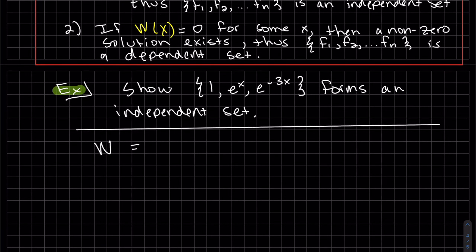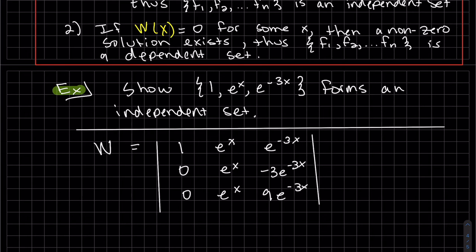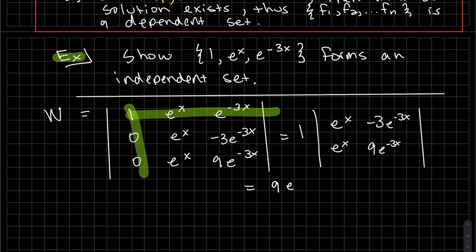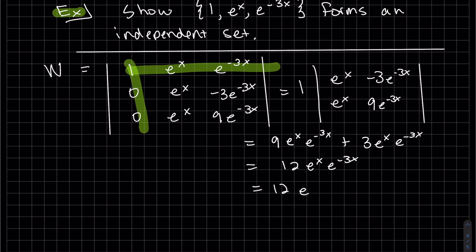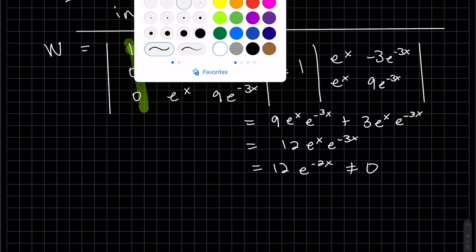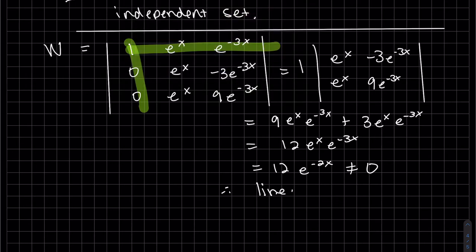So let's show these three functions form an independent set. Let's look at the Wronskian. To set it up, we set up our three functions on the top. Take the first derivative and the second derivative. And work it out. So this function is never equal to zero. So that does not equal zero. So our conclusion is those functions are linearly independent.